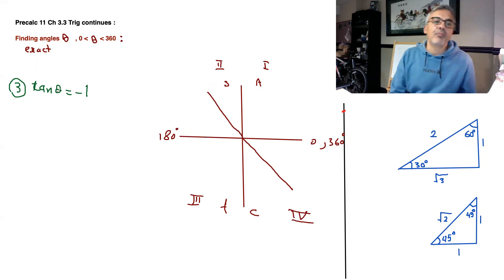And now, which angle has a tan of 1? Ignore the sign, it's just the negative sign tells you which quadrant you're in. Now, you treat it as if it was tan equals 1.